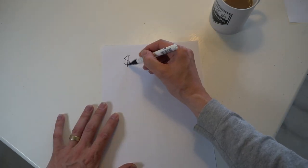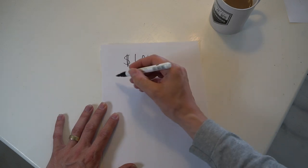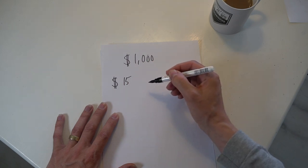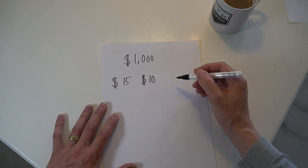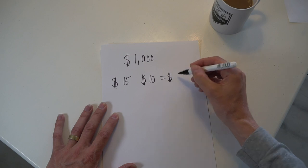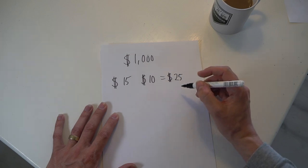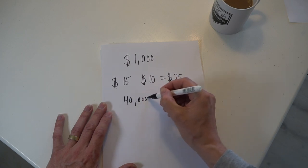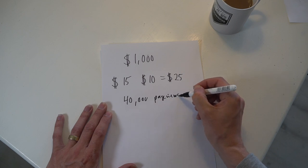Let's say you want to make a thousand dollars per month with a website — that's a pretty good ambition. If you're able to make $15 per thousand page views with ads, and on top of that $10 per thousand page views with affiliate marketing, that equals $25 per thousand page views across the whole site. In that case you will need exactly 40,000 page views per month to make a thousand dollars.